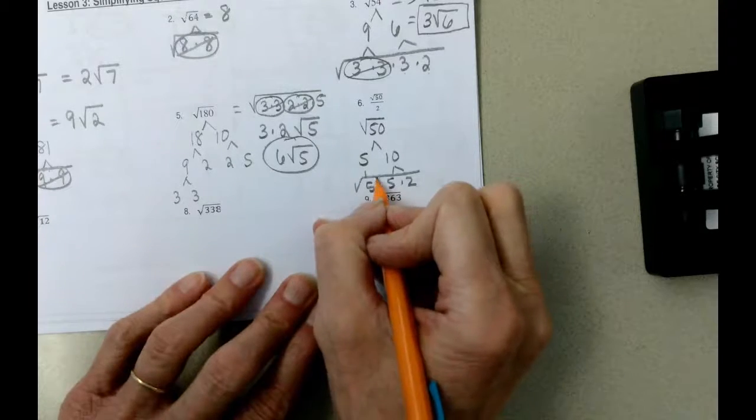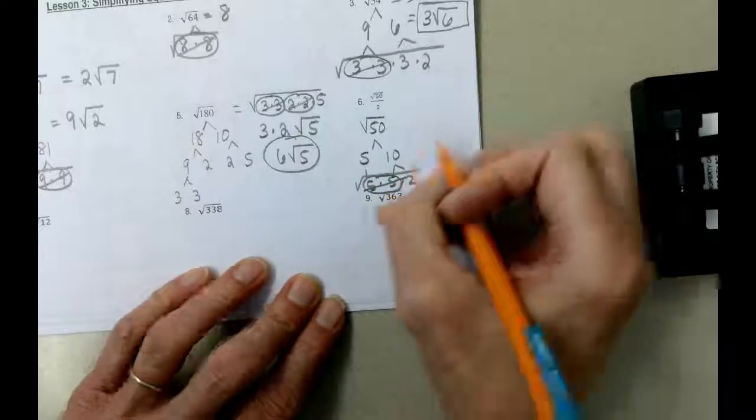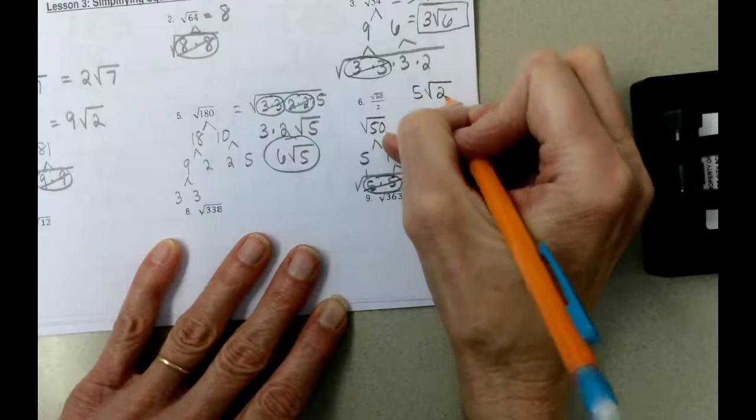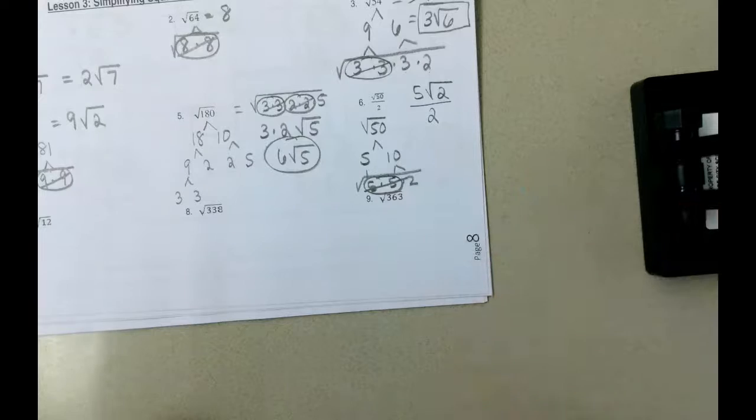We're taking the square root, and we want 2 of the same to take out 1, so we're going to take out a 5. 5 times 5, and then we still have the single 2, and then finally we're divided by 2. We can't do anything else to that problem.